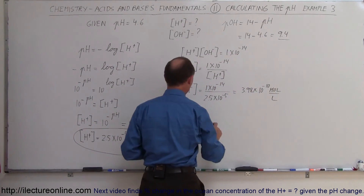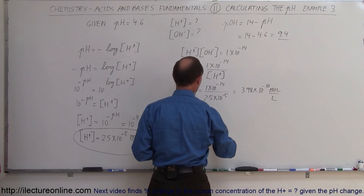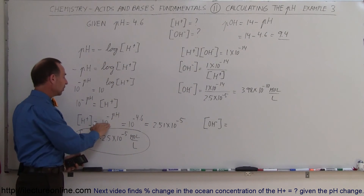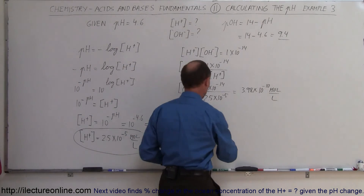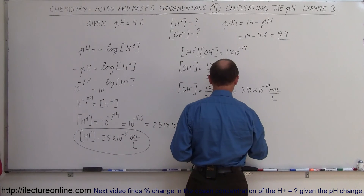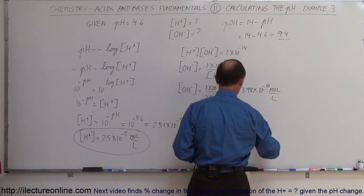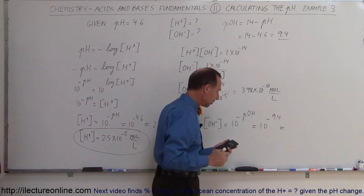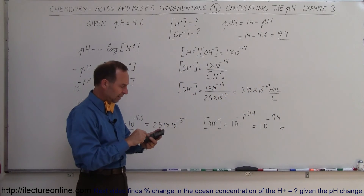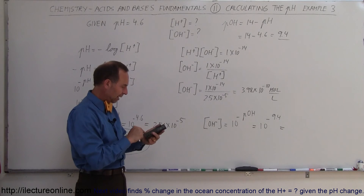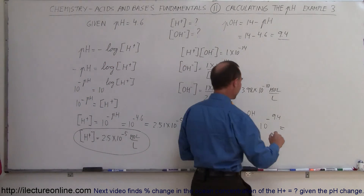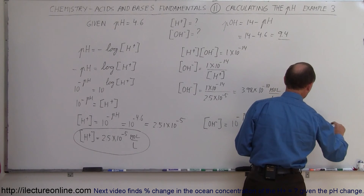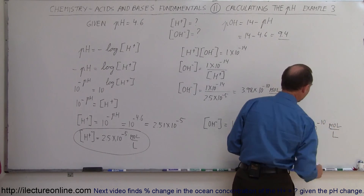Alternatively, we can use the pOH we already found. Just as [H⁺] = 10^(-pH), the hydroxide ion concentration equals 10^(-pOH). In this case, that's 10^(-9.4). Entering that into the calculator confirms we also get 3.98 × 10⁻¹⁰ moles per liter.